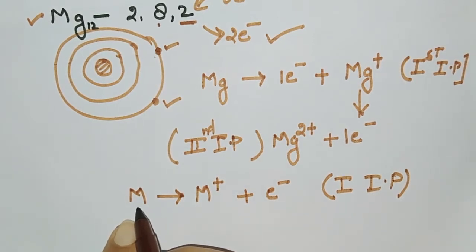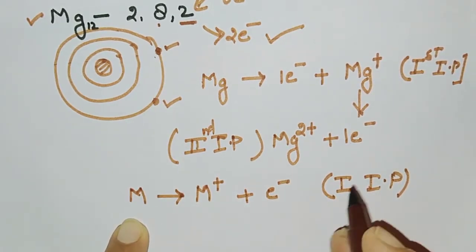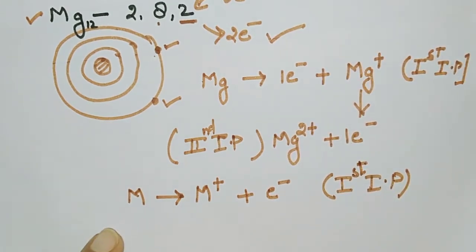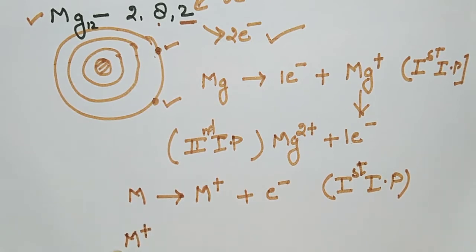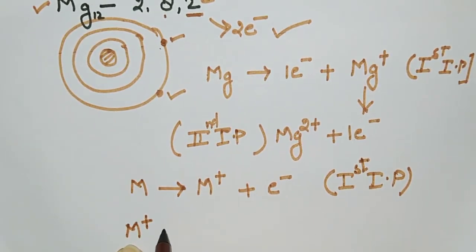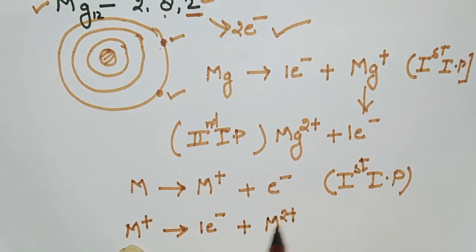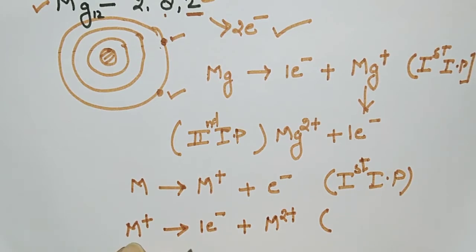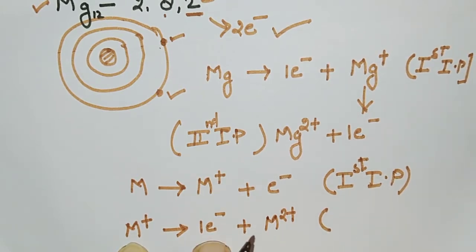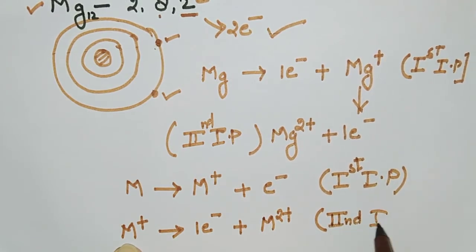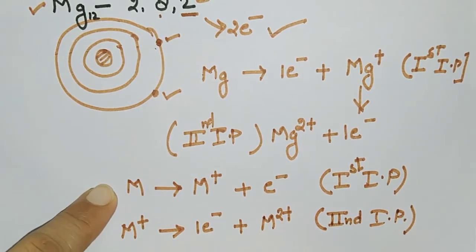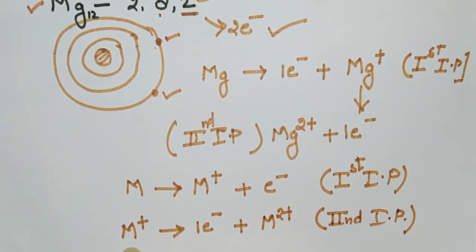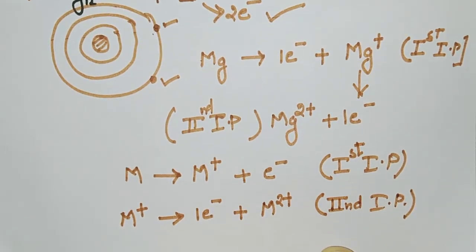The first time the metal releases an electron from its gaseous form, the energy absorbed is called first ionization potential. Now M+, which has already given one electron, when it gives another electron, it becomes M2+. When an ion already in cationic form releases another electron, the energy absorbed is called second ionization potential.